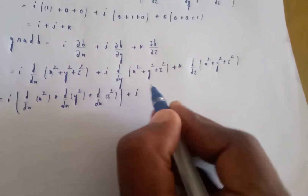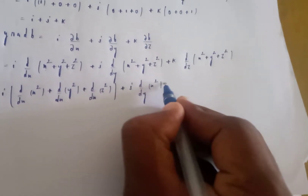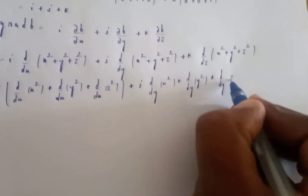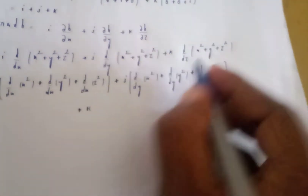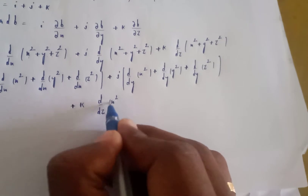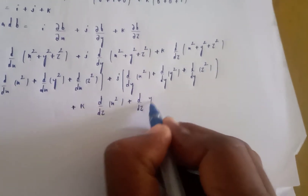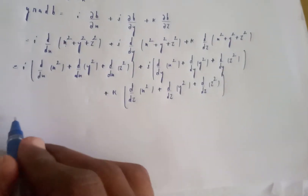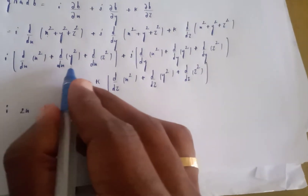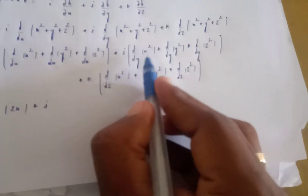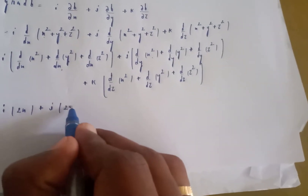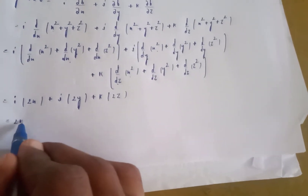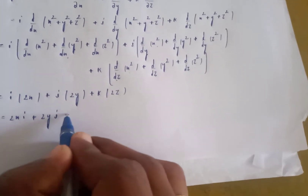Expanding: i into d by dx of x squared plus d by dx of y squared plus d by dx of z squared, plus j of d by dy of y squared, plus k of d by dz of z squared. With respect to x: 2x; y and z terms give 0. With respect to y: 2y; with respect to z: 2z. So grad b equals 2x i plus 2y j plus 2z k.